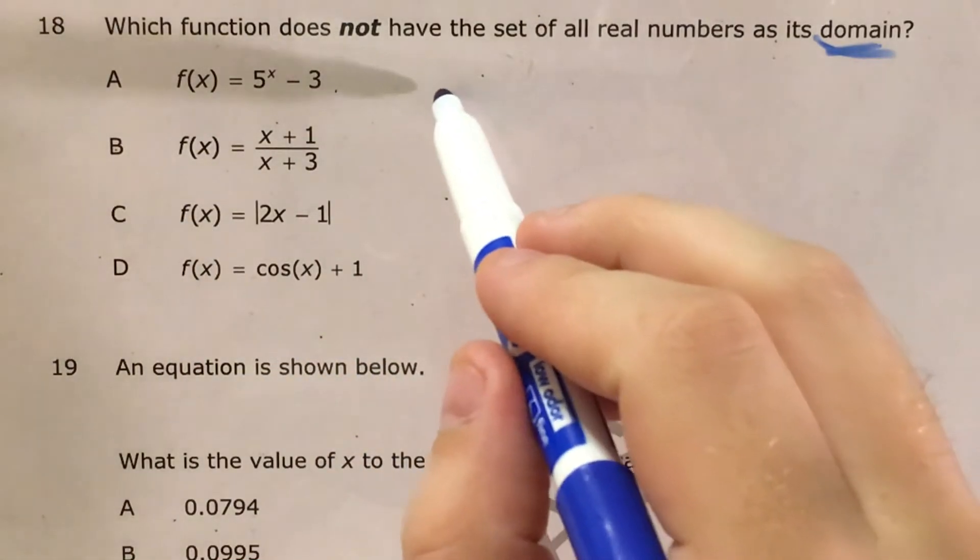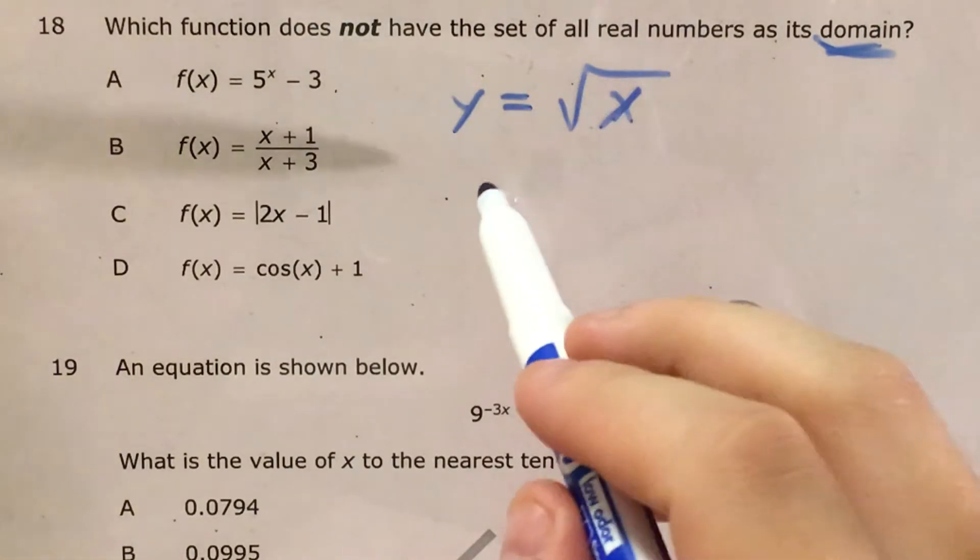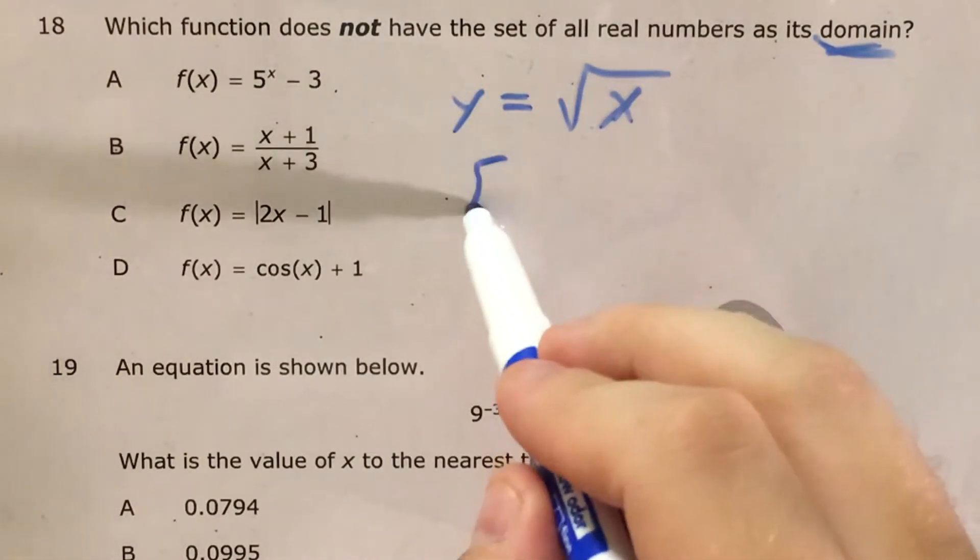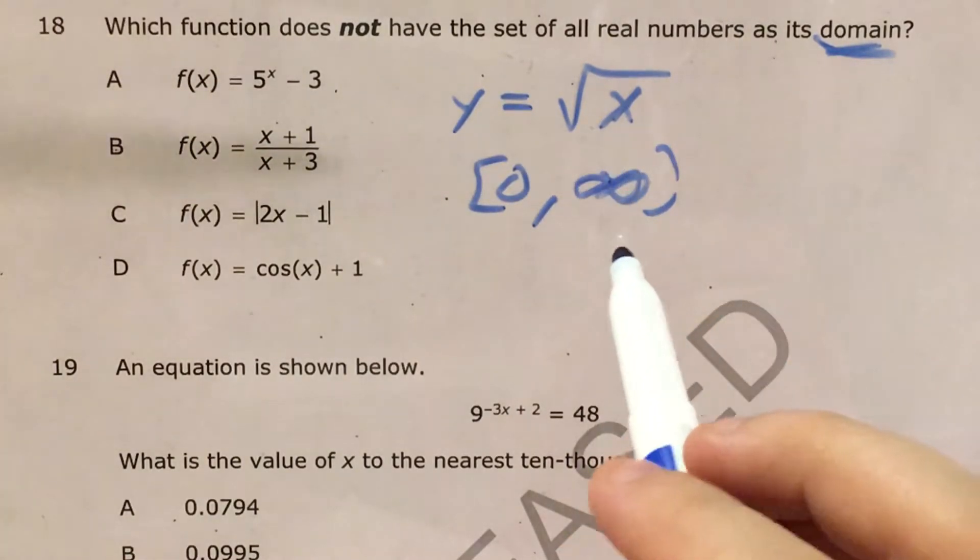So for instance, if my function were Y equals the square root of X, my domain would be anything from 0 to the right, or in interval notation 0 to infinity.